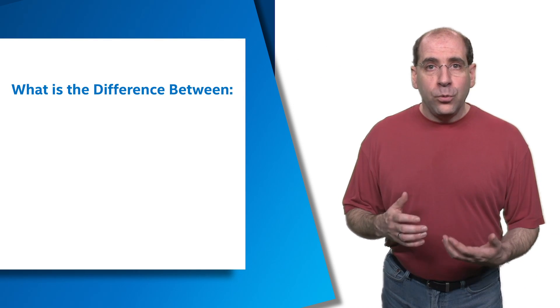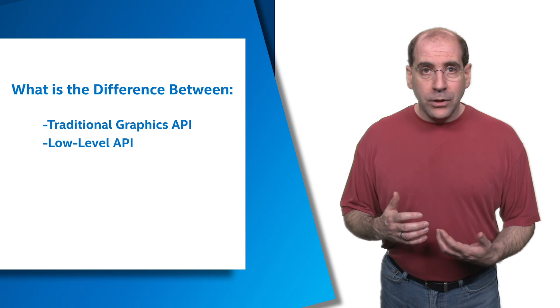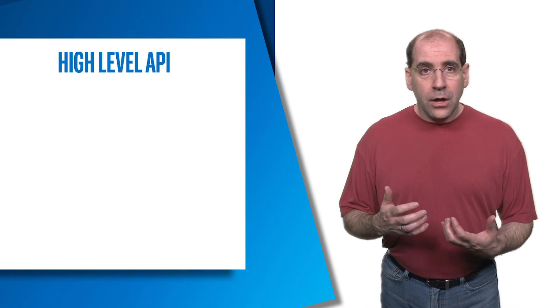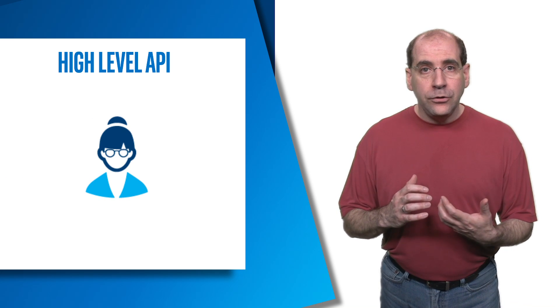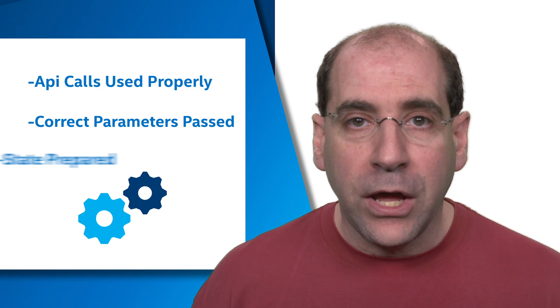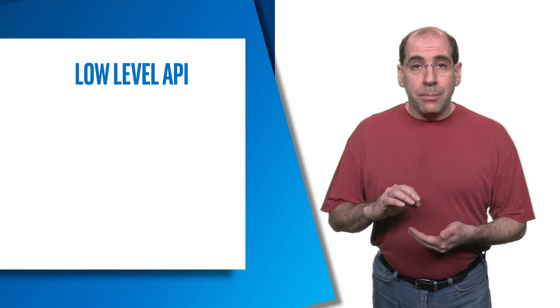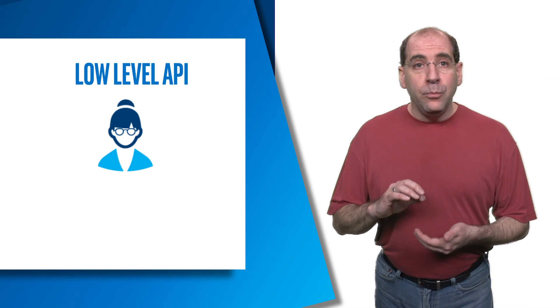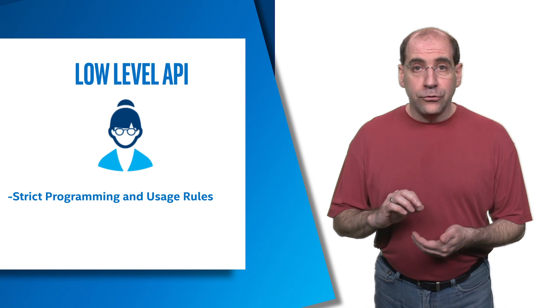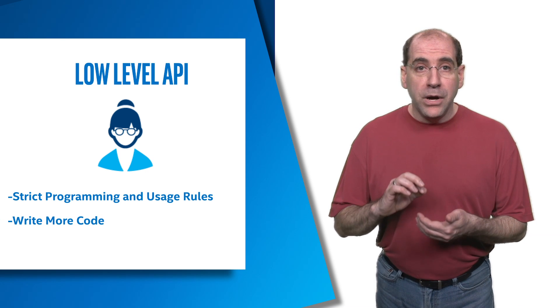What is the difference between traditional graphics APIs and the new low-level APIs? High-level APIs like OpenGL are quite easy to use. The developer declares what they want to do and how they want to do it, and the driver handles the details. The driver checks if API calls are used properly, if the correct parameters are passed, and whether the state has been adequately prepared. Feedback is given on any issues. In low-level APIs, the developer is the one who must take care of these details. They are required to adhere to strict programming and usage rules and also must write much more code.